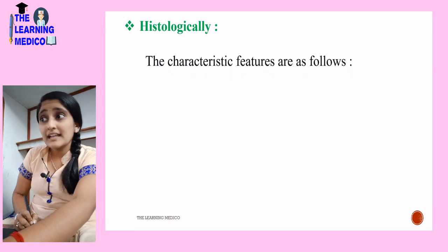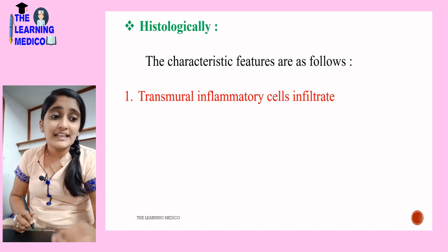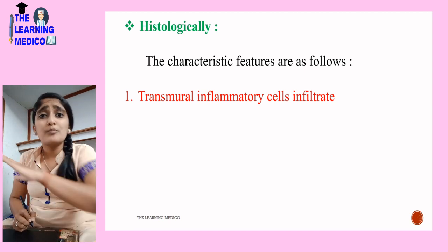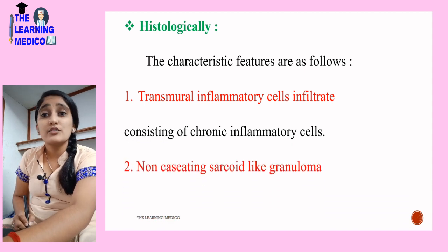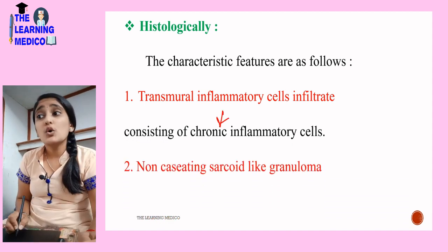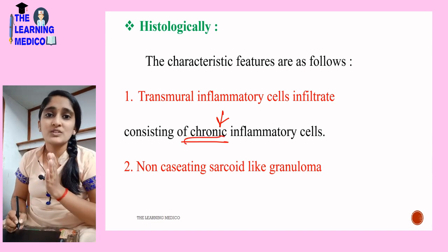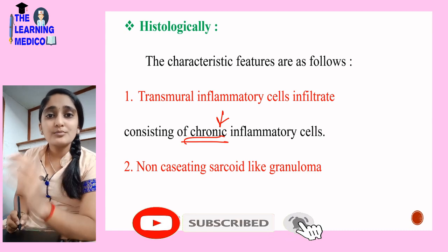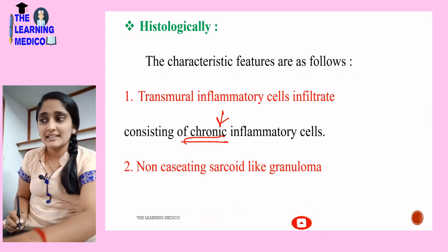Histologically, the characteristic feature is transmural inflammatory cell infiltrate — transmural means the whole thickness is involved. It consists of chronic inflammatory cells, which are present because inflammatory bowel disease is a chronic condition, so we will see chronic inflammatory cells throughout.